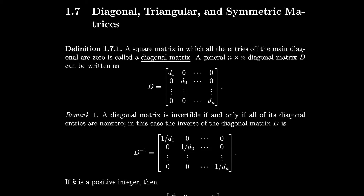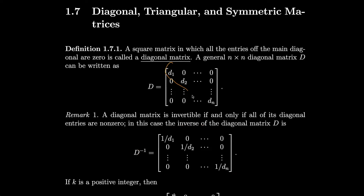In this case, the inverse of the diagonal matrix D is given by taking the entries along the main diagonal and putting them in the denominator — we basically take the reciprocals, one over each of them.